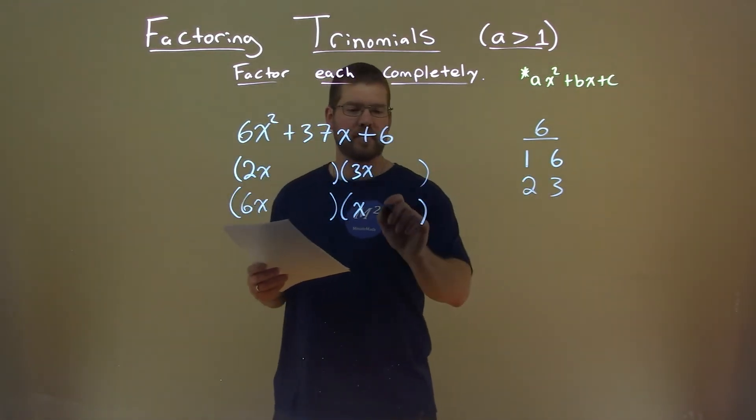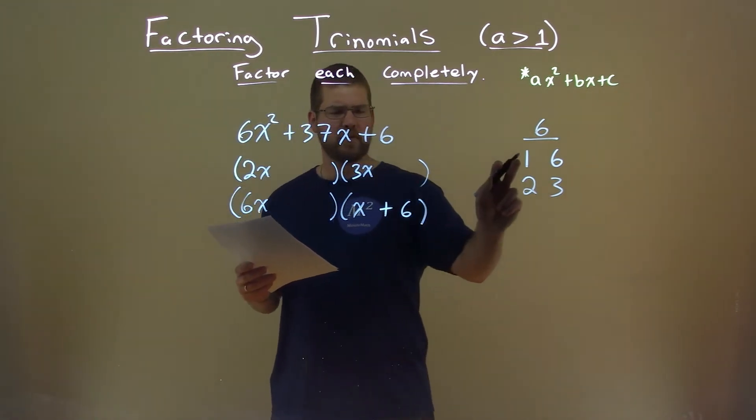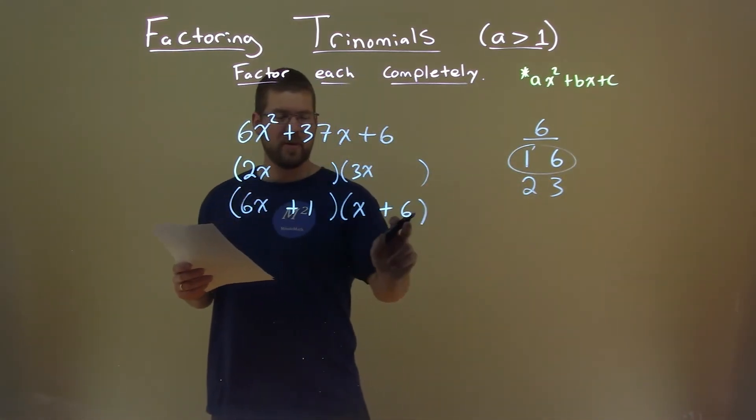6x times 6, so right there, is 36. Well, plus 1, if you put a 1 here, 1 times x is 1x, and 36 plus 1 is 37.